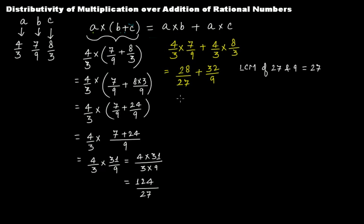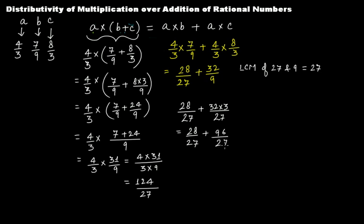The first fraction already has denominator 27, so we write 28. For the second, we write 27 and divide 27 by 9 to get quotient 3, so this becomes 32 times 3, which is 96 over 27. So we have 28 over 27 plus 96 over 27. Adding the numerators: 28 plus 96 gives 124, so the result is 124 over 27.